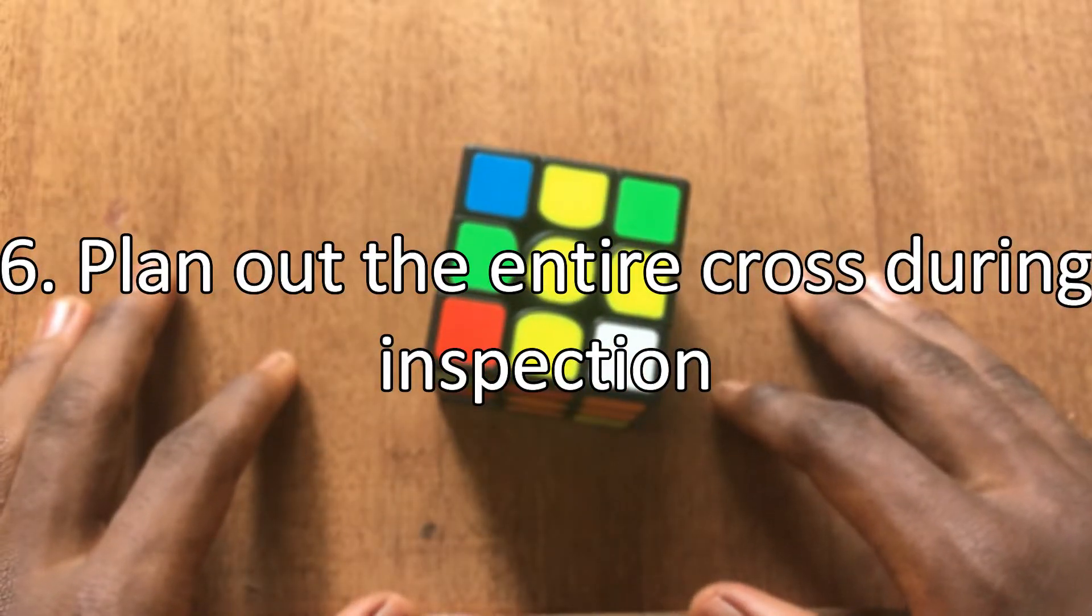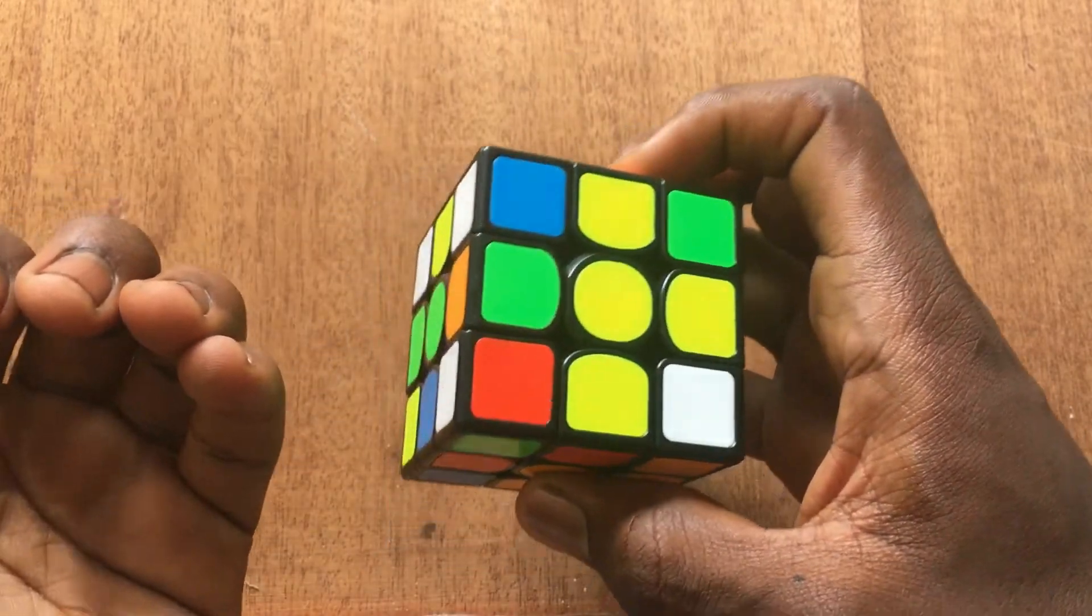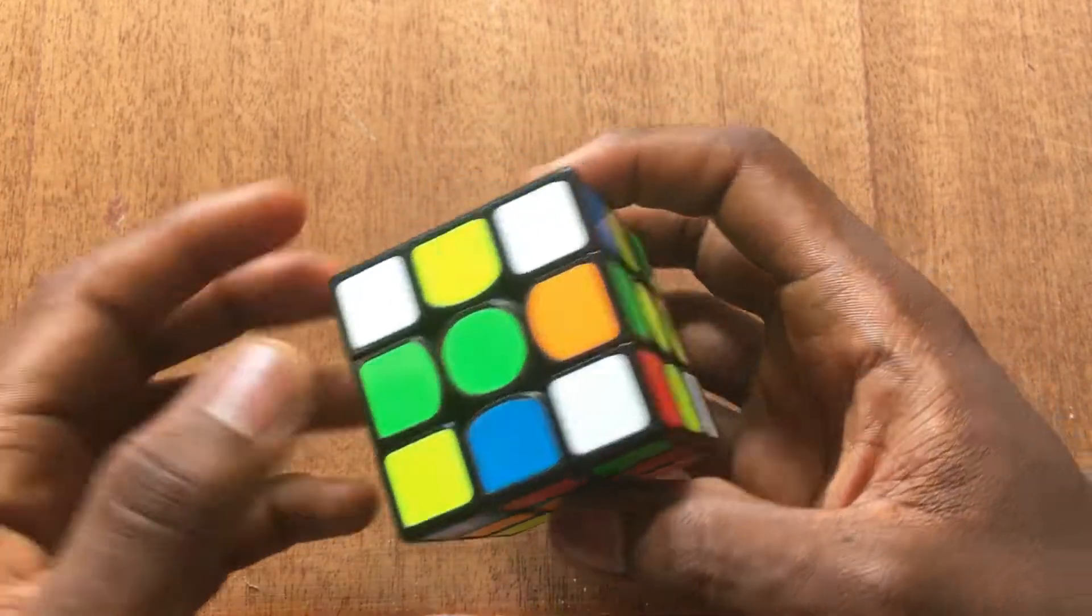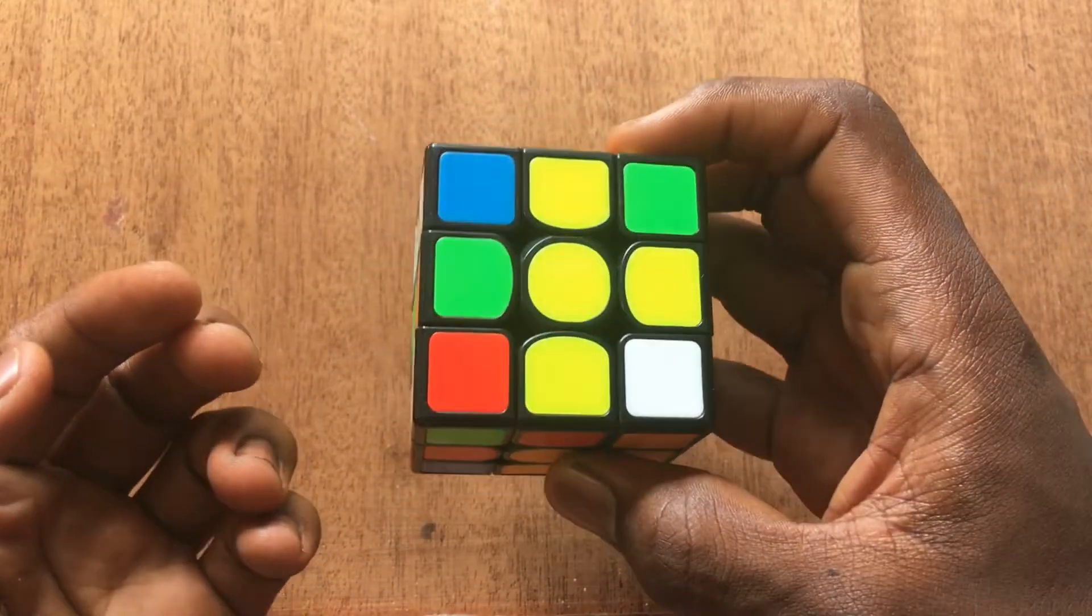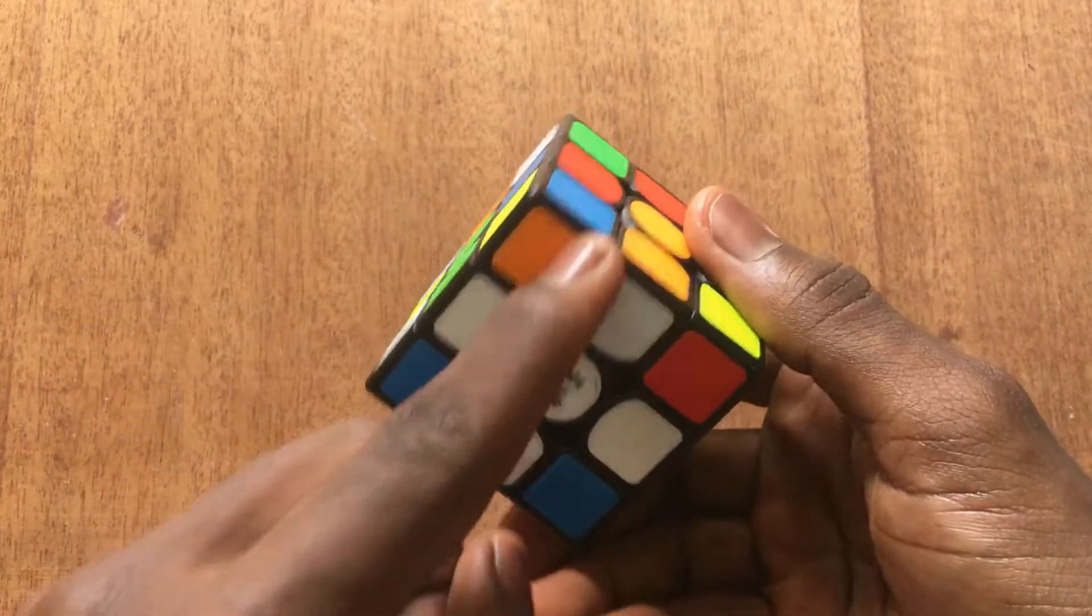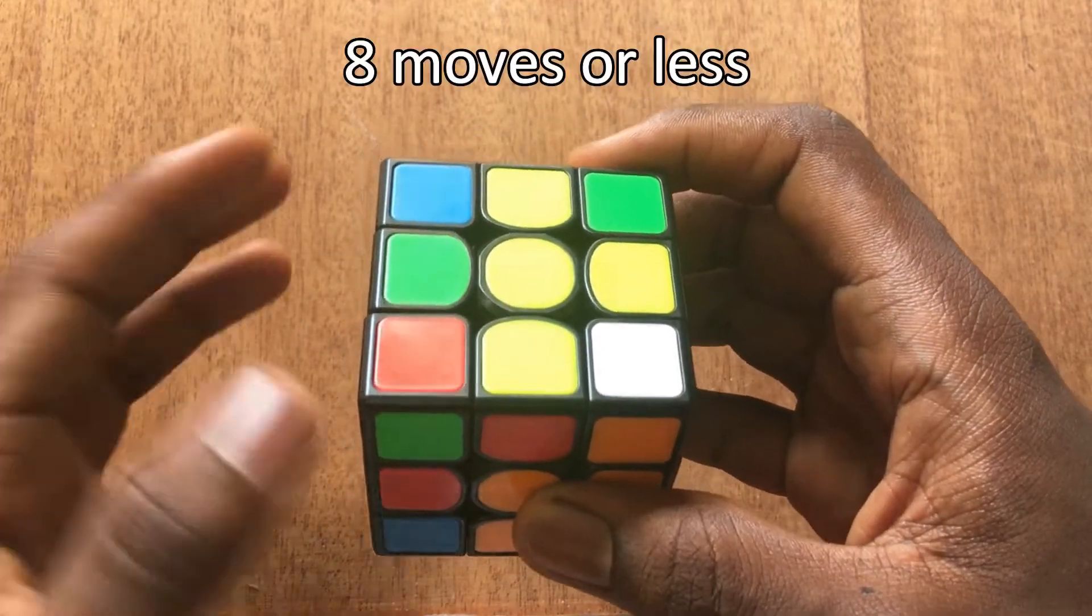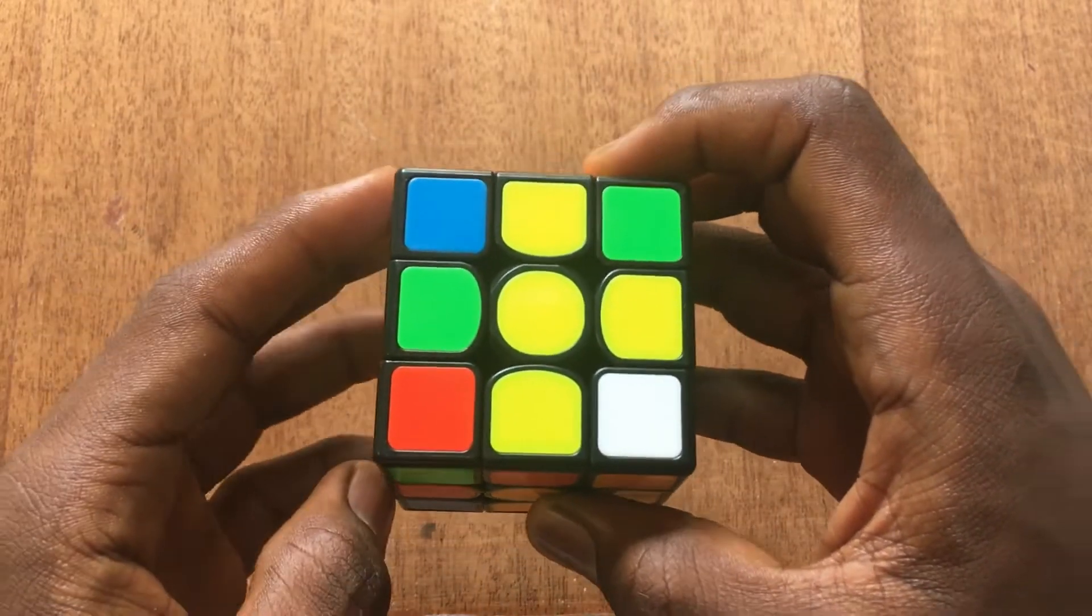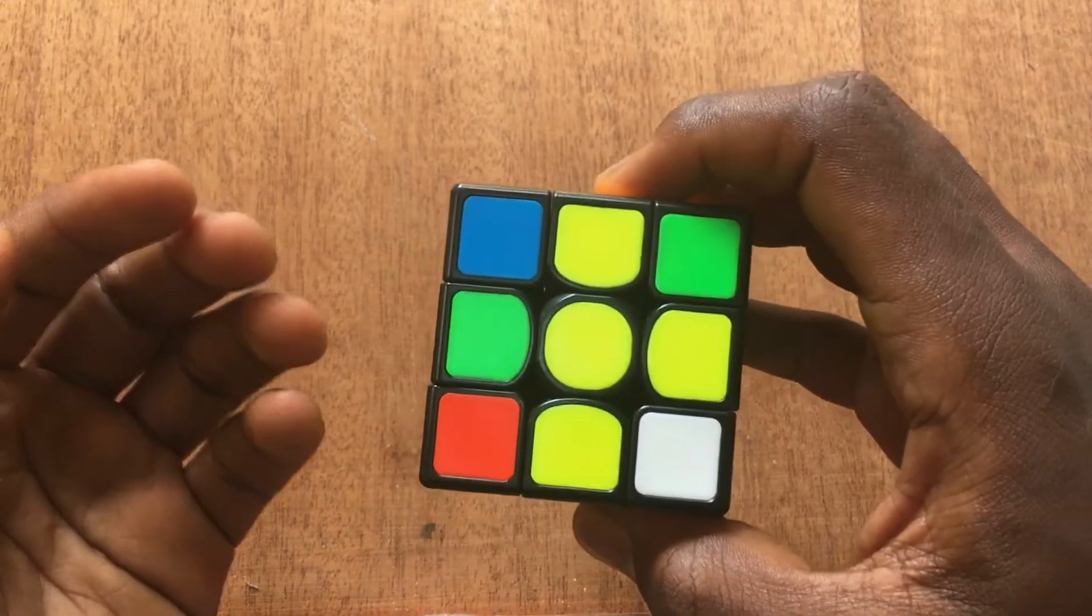Tip number 6: plan out the entire cross during inspection. The WCA gives us 15 seconds of inspection time and we should try as much as possible to use this to our advantage to plan out our four cross pieces. Now advanced cubers plan their cross pieces and their first, second or maybe even third F2L up here. So we're talking like six to ten pieces planning in inspection. So therefore planning only four pieces will not be so much work for us. Also on average every cross can be solved with eight moves or less. So that means we are planning like eight moves or less mostly during our inspection. Now planning the entire cross during inspection is not as hard as it sounds and it gets easier the more you practice.